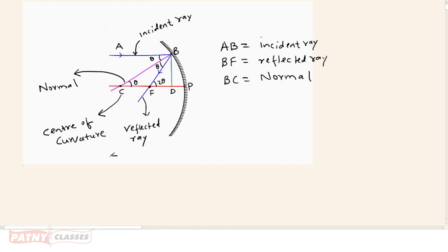This distance, that is distance PC, equals R which equals radius of curvature. And BF equals F which equals focal length.